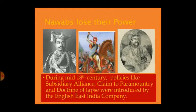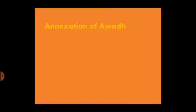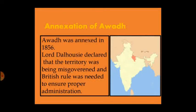Various policies were introduced, such as the Subsidiary Alliance, Claim to Paramountcy, and the Doctrine of Lapse. Regarding the annexation of Awadh: Awadh was annexed in the year 1856 by Lord Dalhousie, as he declared that the territory was being misgoverned and that British rule was needed to ensure proper administration. This action of the East India Company brought major discontent amongst the people of Awadh.